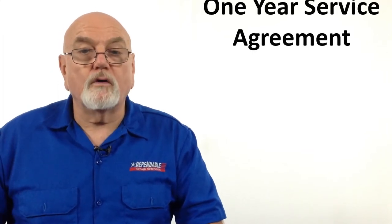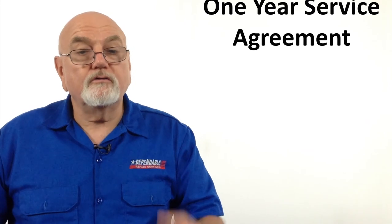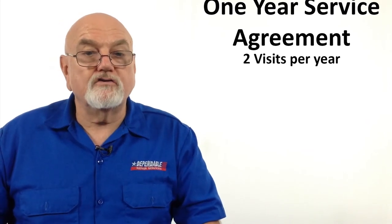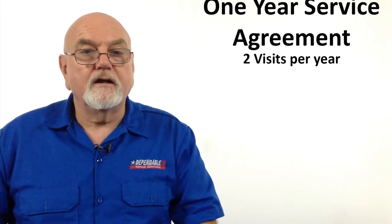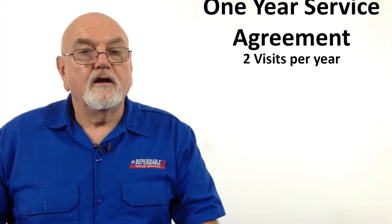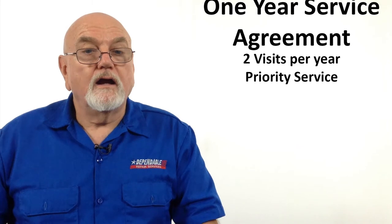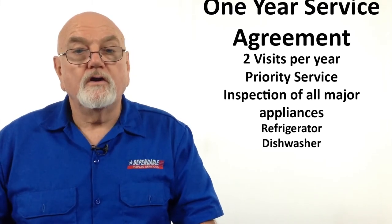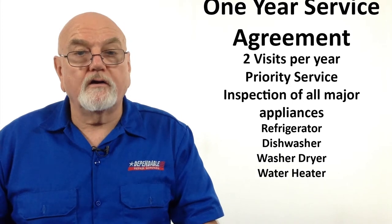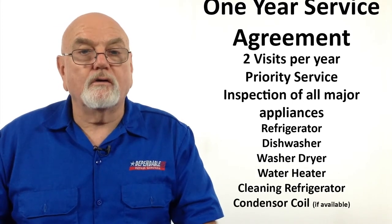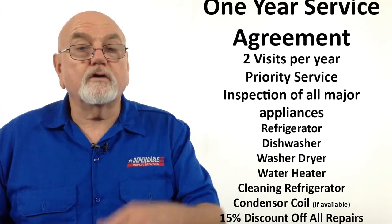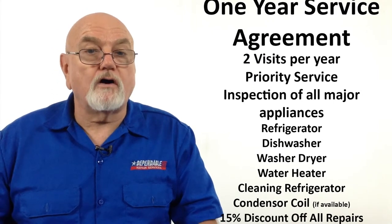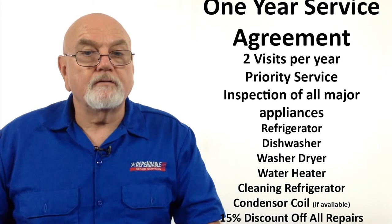All new systems come with a one-year service agreement, which includes two visits and cleanings per year for adjusting your new system to keep it running at maximum efficiency. It includes priority service if repairs are needed, an inspection of all your appliances, including your refrigerator, your dishwasher, your washer, your dryer, and your water heater, and cleaning the refrigerator condenser coil if accessible. It also includes a 15% discount off all products we repair during your service agreement period.